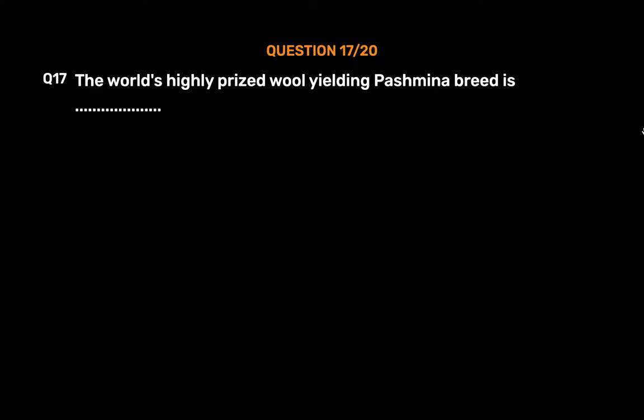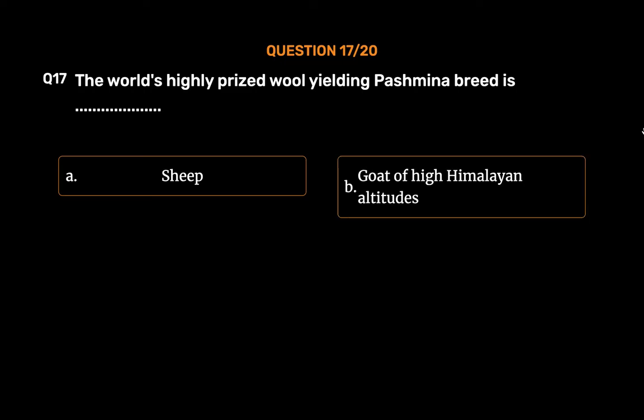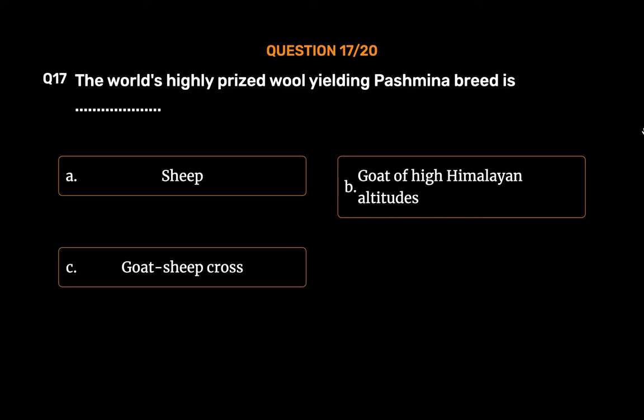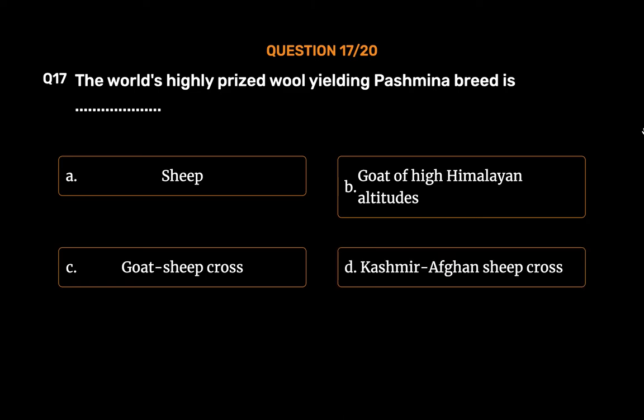Question 17: The world's highly prized wool-yielding Pashmina breed is — Option A: Sheep. Option B: Goat of high Himalayan altitudes. Option C: Goat-sheep cross. Option D: Kashmir-Afghan sheep cross.